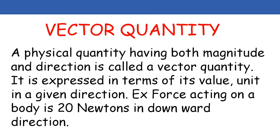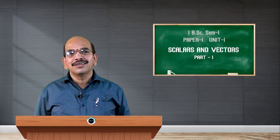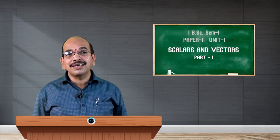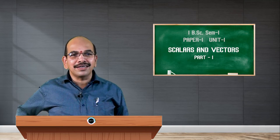While looking at vector quantities, these are physical quantities having both magnitude and direction. They are expressed in terms of their values and unit in a given direction. For example, force acting on a body — suppose it is 20 newtons — we have to mention the direction of the force. So a force of 20 newtons is being acted upon by a body in the downward direction. This type of quantity has a direction.